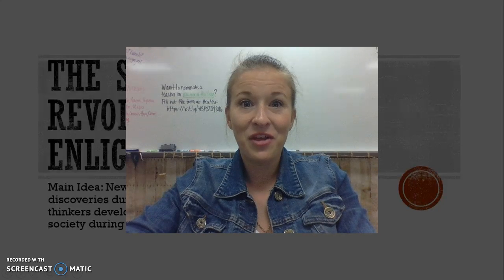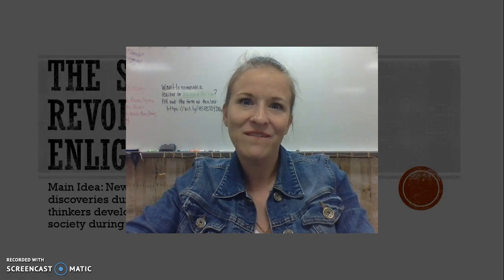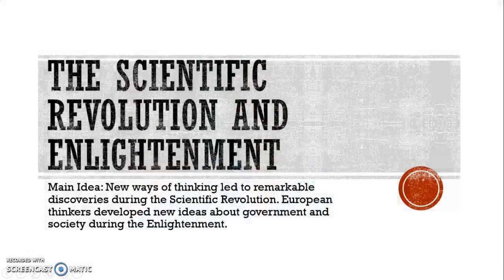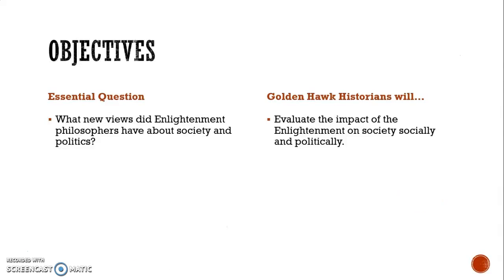Hey there, Golden Hawk Historians! Welcome back for another flipped learning video. Today we're going to be talking about the scientific revolution and the Enlightenment. The Enlightenment really led to new ways of thinking about society and changed everything pretty much overall. The essential question that we're going to be focusing on in this video is: what new views did Enlightenment philosophers have about society and politics?